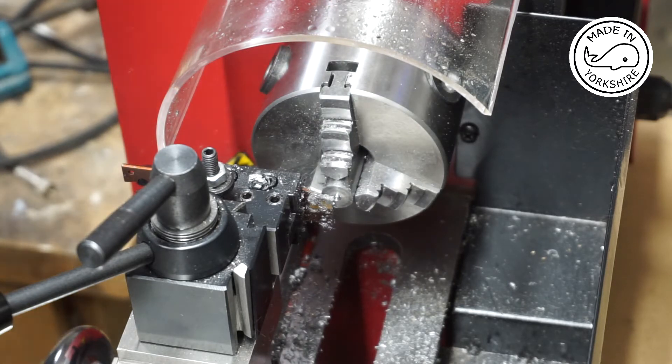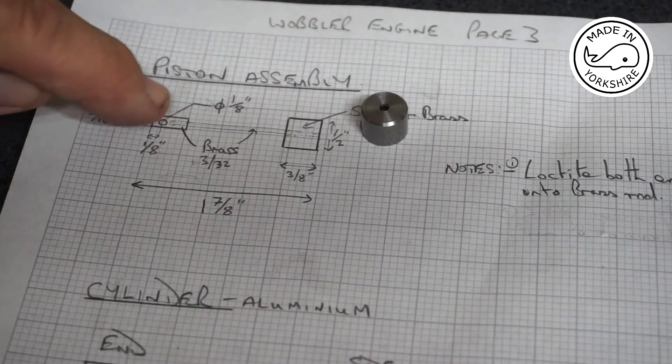Well I'm gradually getting the knack of this parting off. The piston seemed to go okay so now I need to make this little connecting piece here out of brass.